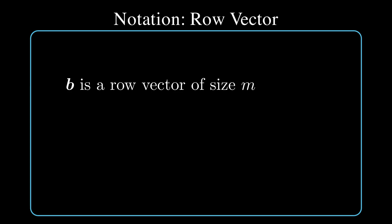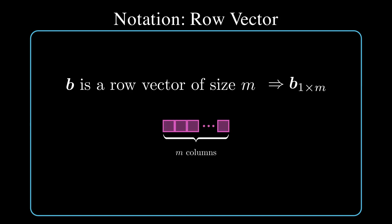We already saw that a vector is a special matrix that has just one column. But we can also have a row vector — a row vector is a special matrix that has just one row. Row vectors are also denoted using lowercase letters similar to column vectors. For example, here we have b as a row vector of size m, meaning it has m columns, and we represent its dimensionality using the subscript 1 by m. By convention, when you see a vector in an article or paper without specification, it is a column vector.